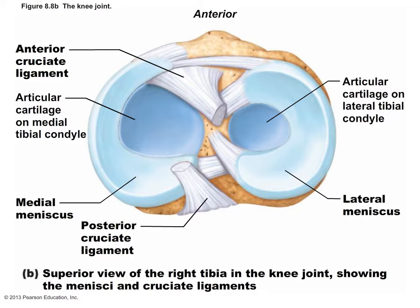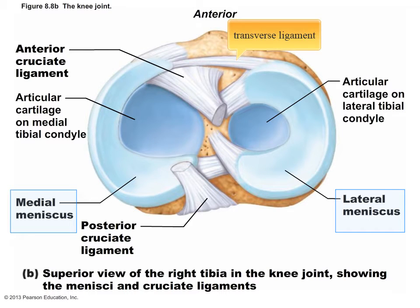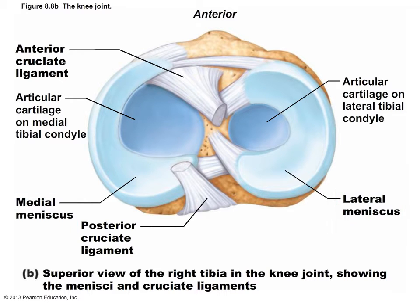Here we see a superior view of the head of the tibia. The bowl-shaped medial and lateral menisci are attached to the tibia by the transverse ligament. The menisci are made up of hyaline cartilage and are only partially attached to the tibia; as a result, they are sometimes torn during sports injuries. The function of the menisci is to allow greater area of contact between the femoral and tibial condyles. They are also somewhat spongy, helping to absorb impact during running and jumping.